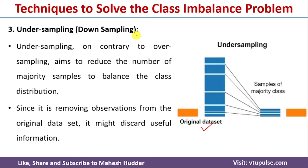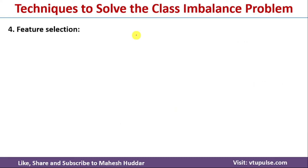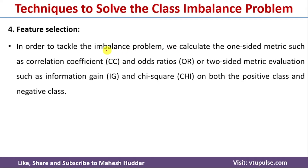Links for videos on undersampling and oversampling techniques are in the description below. The fourth technique is feature selection. For an imbalanced dataset, we can calculate one-sided metrics such as correlation coefficient and odds ratio. If two features have the same correlation, rather than considering both we keep only one, reducing redundancy.